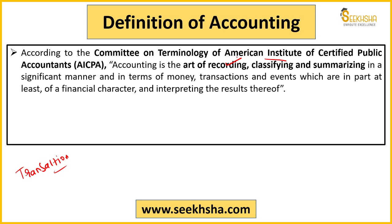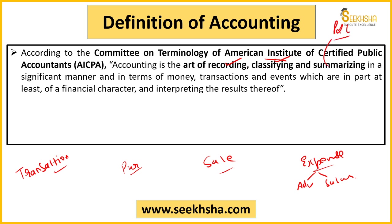अब classification भी होता है — मेरी purchase की entry है, sale की entry है, expenses की entry है। Expenses में भी 50 तरह के expenses आ जाएंगे — advertisement expense, salary expense — तो classify करना पड़ेगा। तब ही पता चलेगा कि marketing में ज़्यादा खर्चा हो रहा है या sale में। And finally उसको summarize भी कर रहे हैं — एक P&L statement बना रहे हैं।